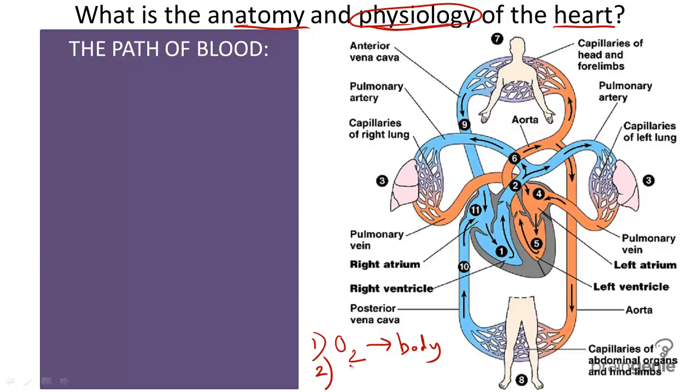Two, the heart takes deoxygenated blood, or blood that is oxygen deficient. It is filled with carbon dioxide instead, and it takes blood from the cells of the body and pumps it to the lungs for excretion.